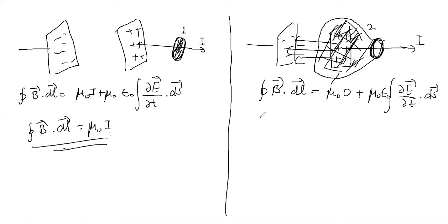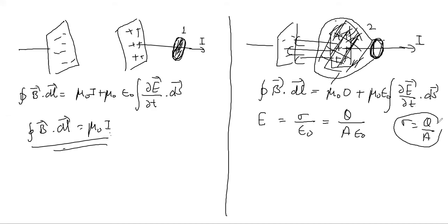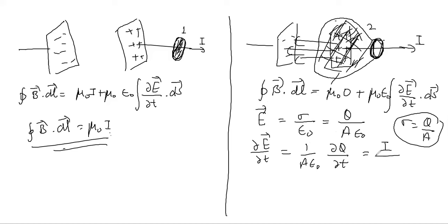The electric field inside a parallel plate capacitor is sigma over epsilon naught, which in terms of charge is Q over A epsilon naught, where Q is the charge on the plates and A is the plate area. Taking partial E by partial t — since A and epsilon naught are constant and only Q changes — gives partial E by partial t equal to 1 over A epsilon naught times partial Q by partial t, which equals i over A epsilon naught, since the rate of change of charge is current.